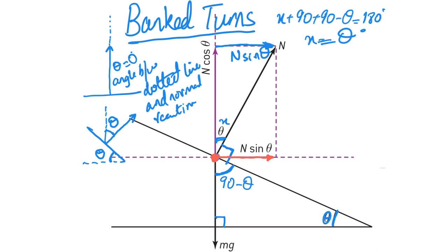Remember that you were making a turn this way. So N sin θ over here is going to provide the centripetal force. Now just imagine that N sin θ is also contributing to your centripetal force. When you were on a flat road it was just friction, but now it's not just friction — the road is also helping you make that turn. That is why the cars don't skid.